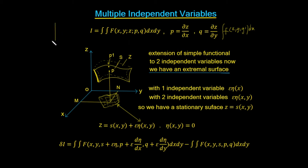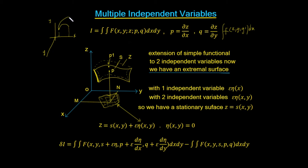With one independent variable, we would start off with an extremal — a curve — going from one point to another in the x-y plane. But now instead of having an extremal which is a curve, the extremal is also dependent on another value, let's say y. So that means that instead of having an extremal curve, we're actually going to have an extremal surface — that curve becomes a surface in 3D space.